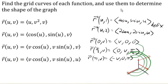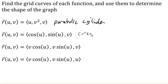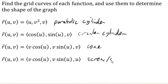Putting this all together: for the first surface we had a parabolic cylinder; for the second, a circular cylinder; for the third, a cone; and for the last one, a screw shape or spiral staircase — whatever you want to call it. That last one isn't a standard technical term, but the first three are shapes we've seen before and should be familiar.